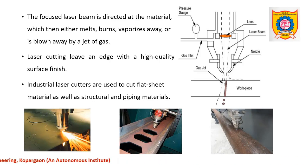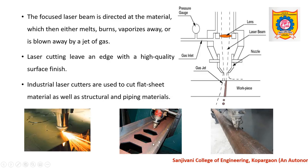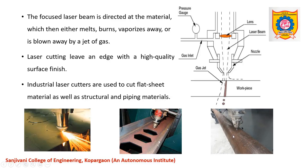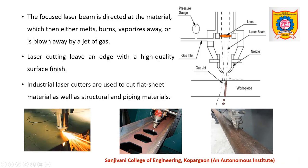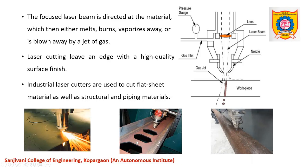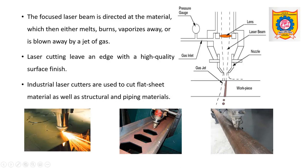Industrial laser cutters are used to cut flat sheet material as well as structural and piping materials. As seen here, a pipe can be drilled or cut according to requirements — even very fine holes can be drilled using this laser jaw. If any specific portion of structural material is to be drilled or cut, that is also possible. So these lasers are highly useful in the industrial area.